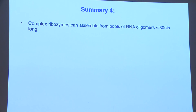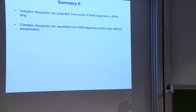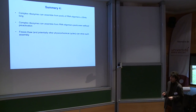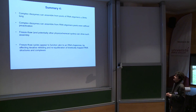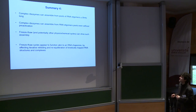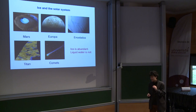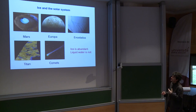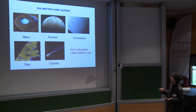To summarize: complex ribozymes can be assembled from pools of RNA oligomers less than 30 nucleotides long, without pre-activation, using freeze-thaw and potentially other physicochemical cycles, which drive assembly by re-equilibrating misfolded RNA conformers. Ice functions akin to an RNA chaperone by effecting iterative refolding of kinetically trapped RNA structures. And if we think of our solar system as a typical planetary system, ice is abundant — liquid water is not. There are whole celestial bodies in the outer solar system built mainly from water ice, and freeze-thaw cycles are still ongoing on at least one planet.